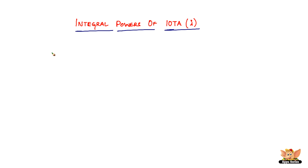In this video, we are going to look into another topic related to complex numbers and the imaginary unit, which is iota, I. We are going to look into integral powers of iota, or I. The integral powers of iota are split into positive integral powers and negative integral powers. To start off with, we are going to look into positive integral powers of iota.